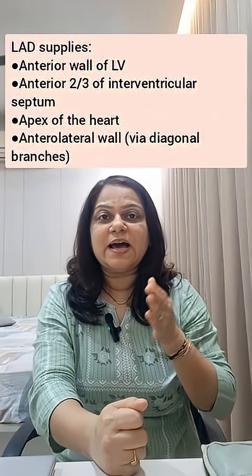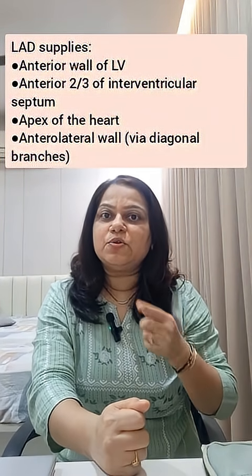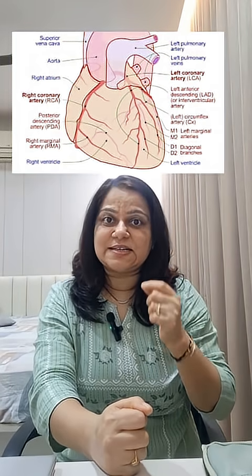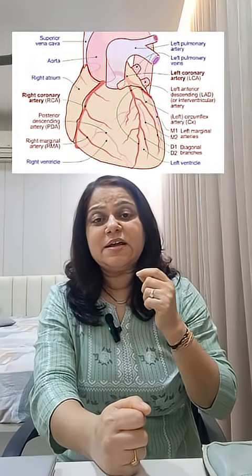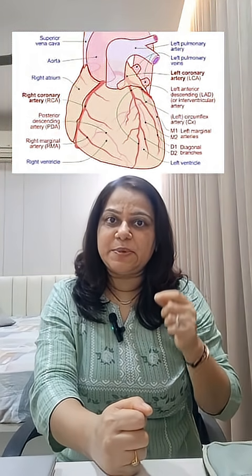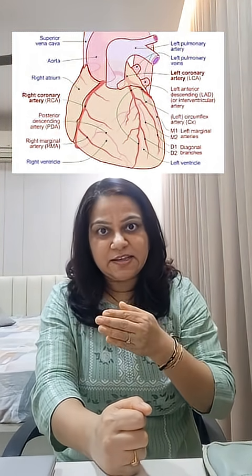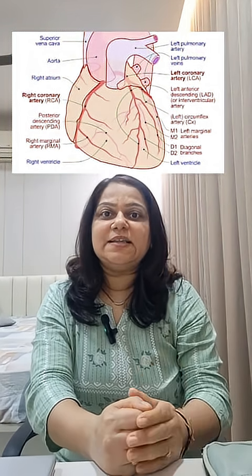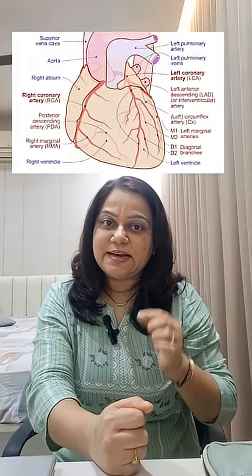It also supplies the anterolateral wall via diagonal branches. The most consistent and classical territory affected in left anterior descending branch occlusion is the anteroseptal region — meaning the anterior wall and septum. That is why the correct answer is the anteroseptal wall.